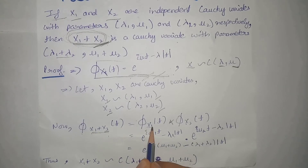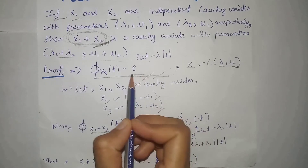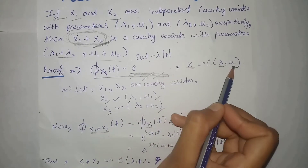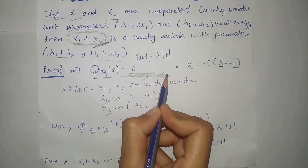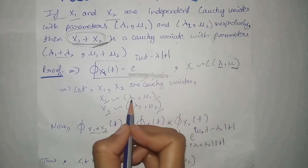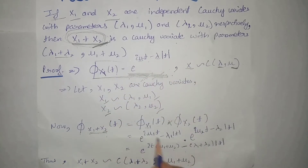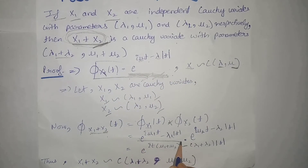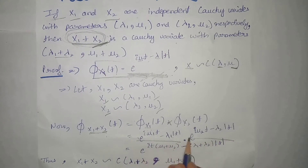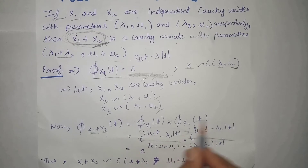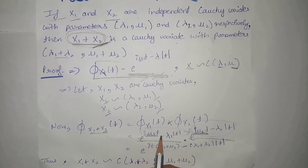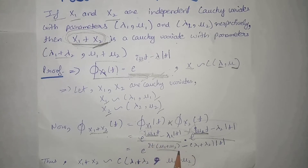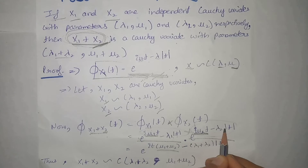The characteristic function of x1 is this expression with parameters lambda1 and mu1. The characteristic function of x2 is similarly obtained with parameters lambda2 and mu2. Multiplying these together, since the base is the same, the powers add up: this term plus this term, and this term plus this term, giving us a combined expression.